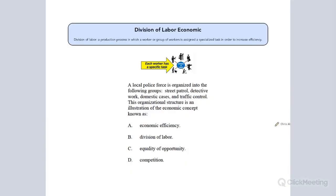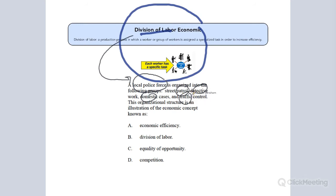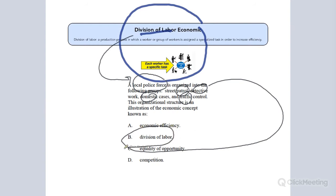Let's look at another question involving division of labor. Within every industry, when we think about division of labor, every industry is going to be broken up into different tasks so that each task can be specialized in. What is the industry here? We're looking at law enforcement. In that one area, there are several divisions of labor: we have patrol, detective, domestic, traffic. This is taking one industry and giving an example of divisional labor.